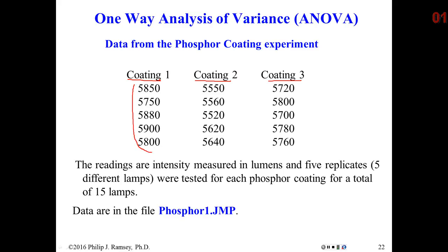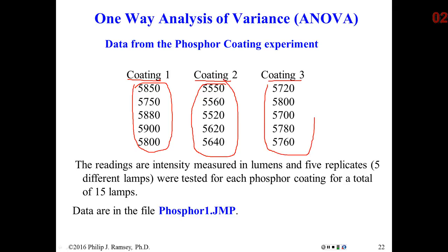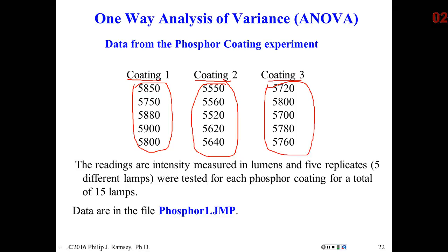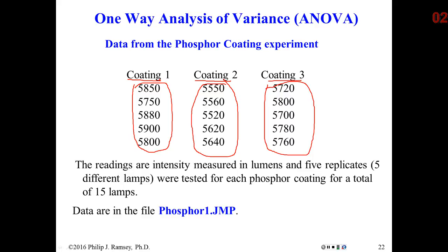Within each coating, we have five replicates. The differences in those replicates is considered noise, or Fisher would say experimental error — there is no explanation for this variation within each group. It's just naturally how these bulbs vary at random. So what we want to do is separate out the variation that may have been caused by using different coatings from the variation that is simply noise — the variation within the groups. We want to separate the variation between the groups from the variation within the groups, which represents noise.